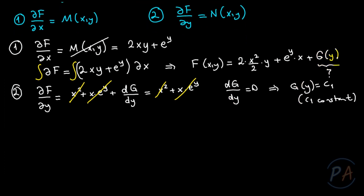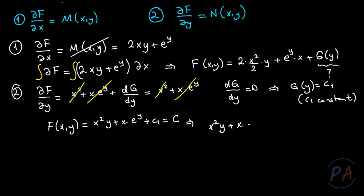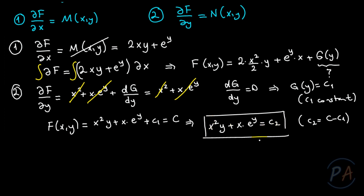This means g(y) = c₁, a constant. By determining the function g, I have determined all components of f(x,y). So f(x,y) = x²y + xe^y + c₁ = c, which can be rewritten as x²y + xe^y = c₂, where c₂ = c − c₁. This is the solution of the given exact differential equation.